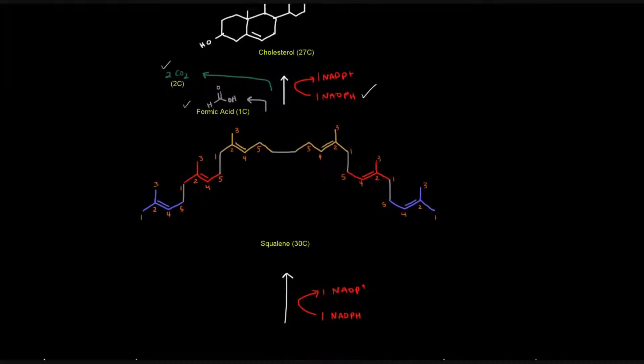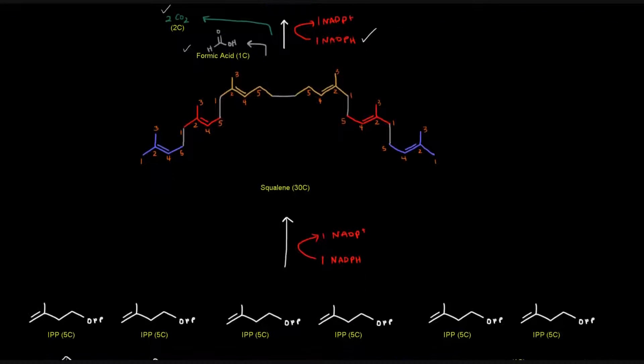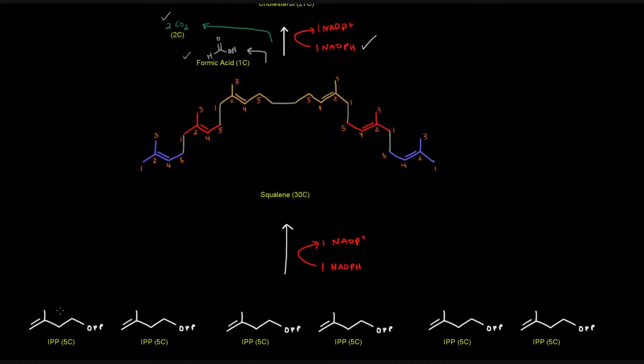So how did we get the squalene? The squalene came from the condensation of six IPP molecules, each of them being five carbons. Two of them were converted to DMAPP in order to actually have the reactions occur, but the DMAPPs came from IPPs, so it's not unfair to say that six IPPs were just put together to make squalene, and that required an NADPH.